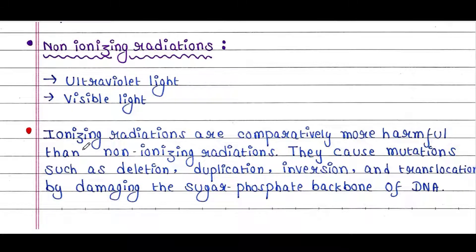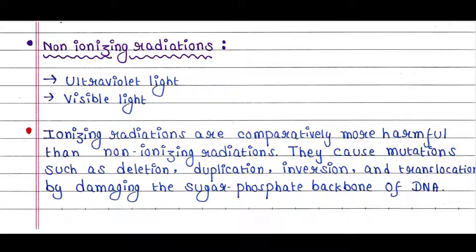Ionizing radiations are comparatively more harmful than non-ionizing radiations. They cause mutations such as deletion, duplication, inversion, and translocation by damaging the sugar-phosphate backbone of DNA.